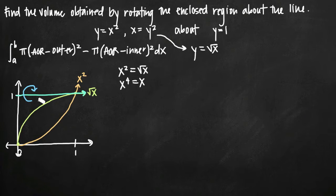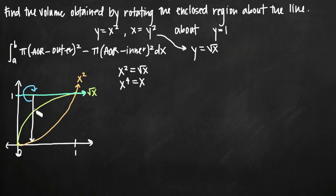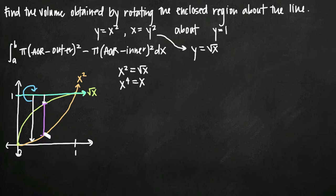The outer curve is farther from the axis of rotation and the inner curve is closer. Our outer curve is x squared, so axis of rotation minus outer curve gives the distance from y equals 1 down to x squared. Subtracting axis of rotation minus inner curve gives the distance to the inner curve, and taking the difference gives the area between the curves — that's why the formula is set up this way.